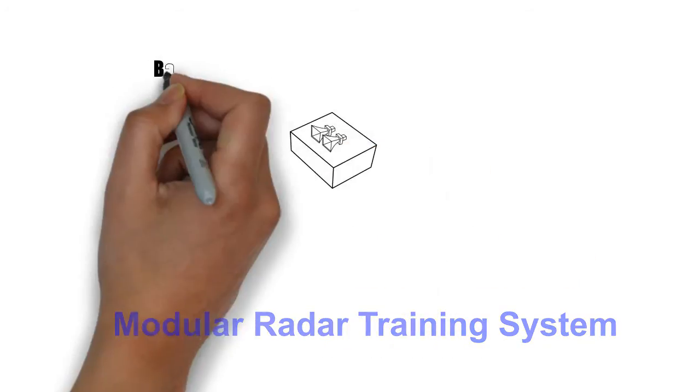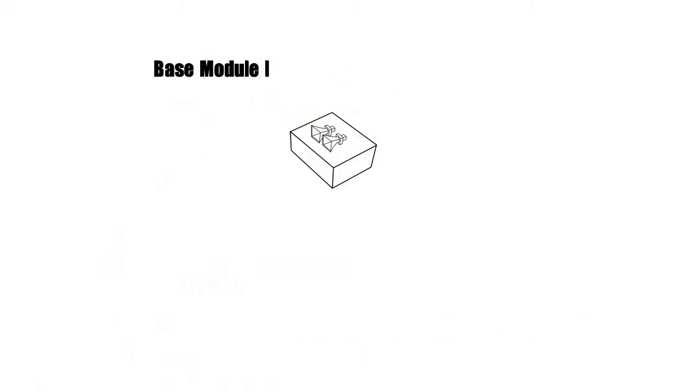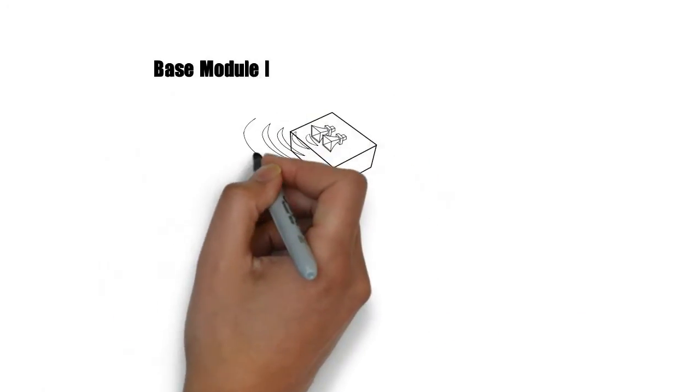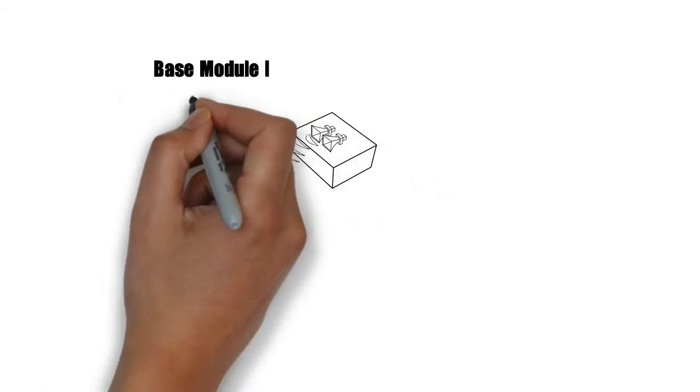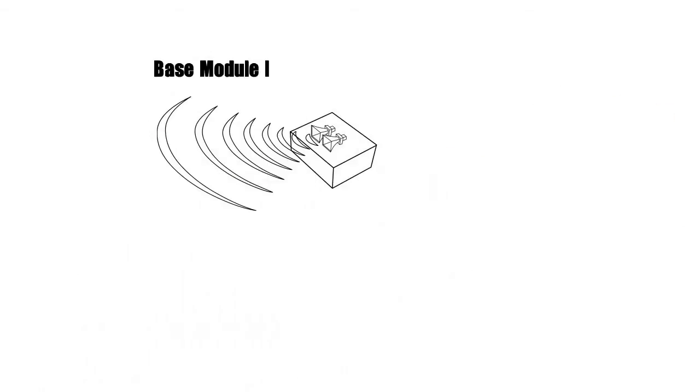This is the Base Module 1, the heart of our SkyRadar Modular Radar Training System. The Base Module has two horn antennas and is ready to operate in constant wave and pulsed mode.